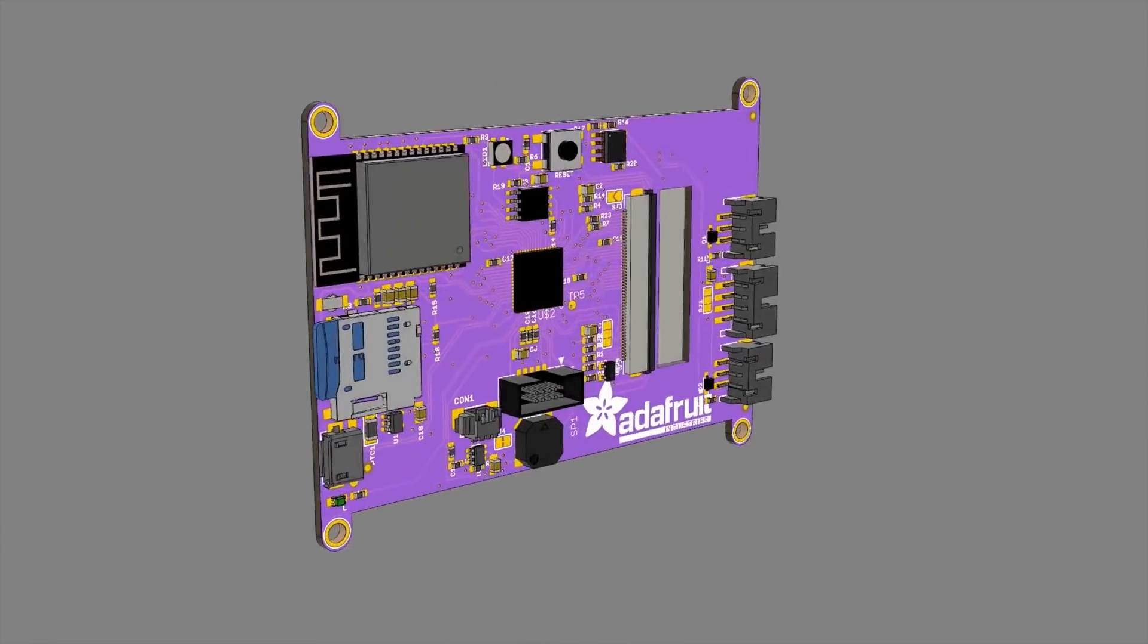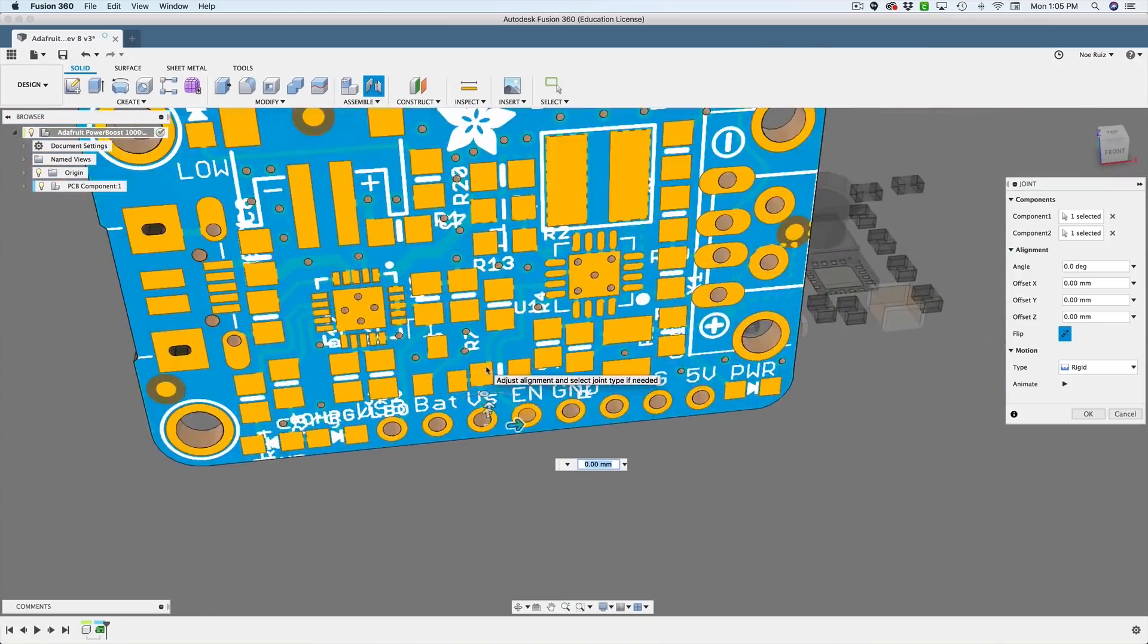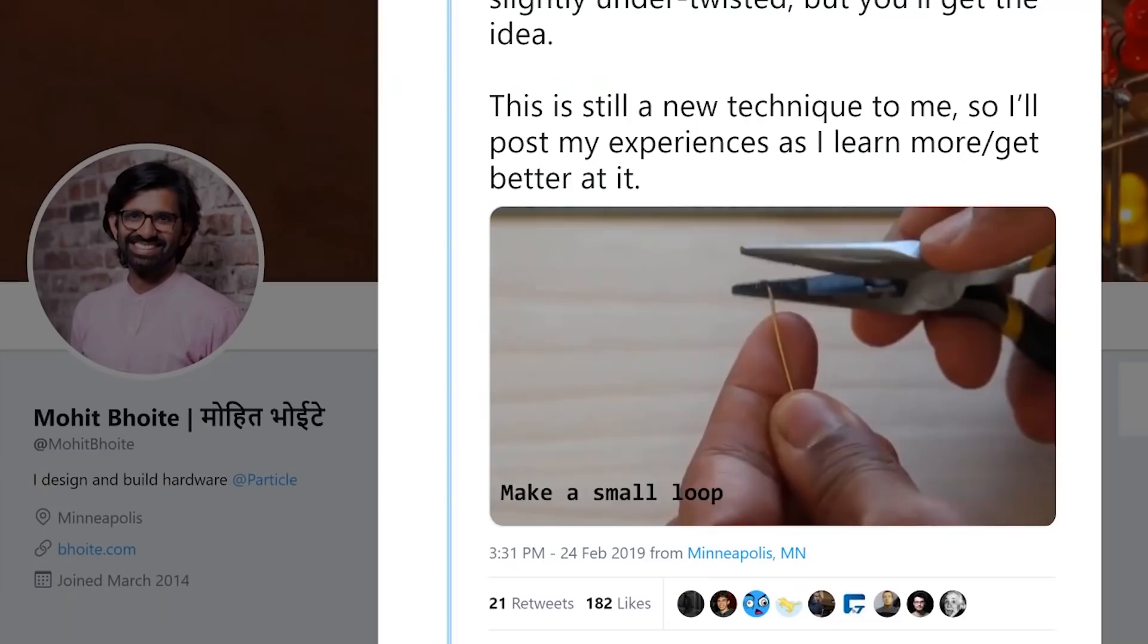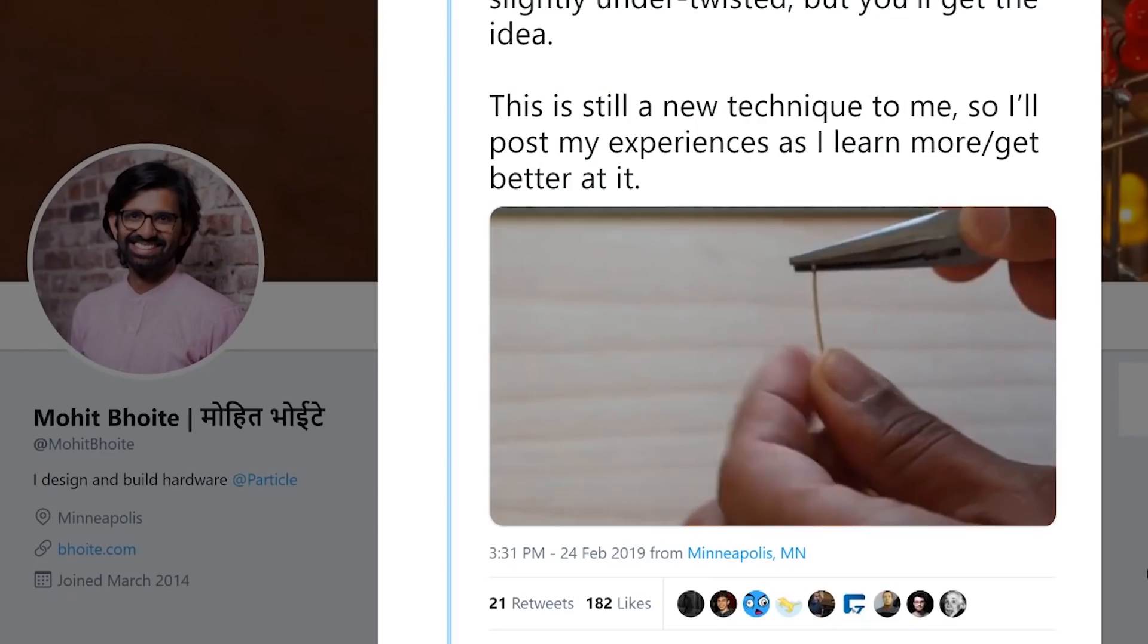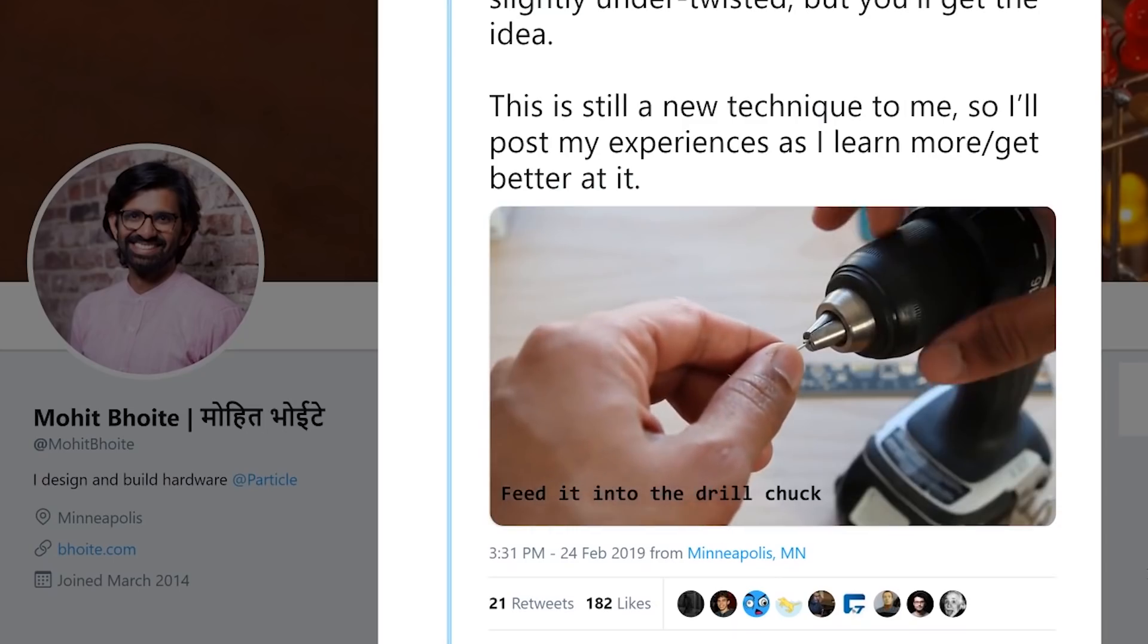The Ruiz brothers have a new Fusion 360 tutorial on how to take circuit board designs and animate them to spin around using the joints feature. And one of my favorite tips this week is this one from Mohit Boyt showing how to straighten and stiffen brass wire by slowly twisting it in a drill chuck.